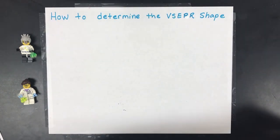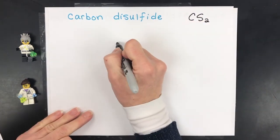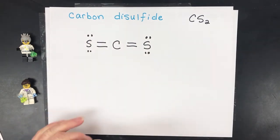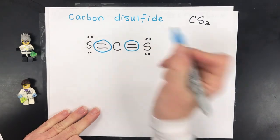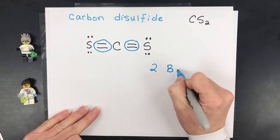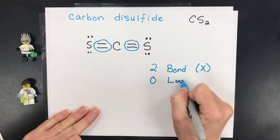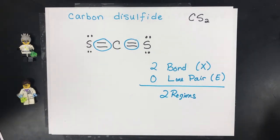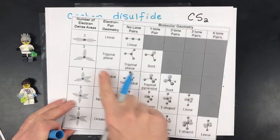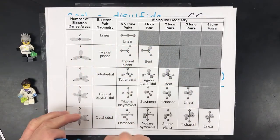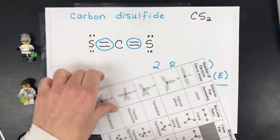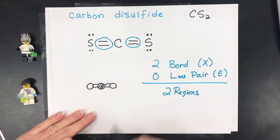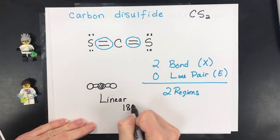The next example is carbon disulfide, CS2. Its dot structure shows carbon in the middle making a double bond on both sides to a sulfur. The next step is counting regions of electron density: there are two regions that are bonded — double bonds still count as one region — and zero lone pairs, giving a total of two regions. With two regions and no lone pairs, it's a linear molecule with a bond angle of 180 degrees.